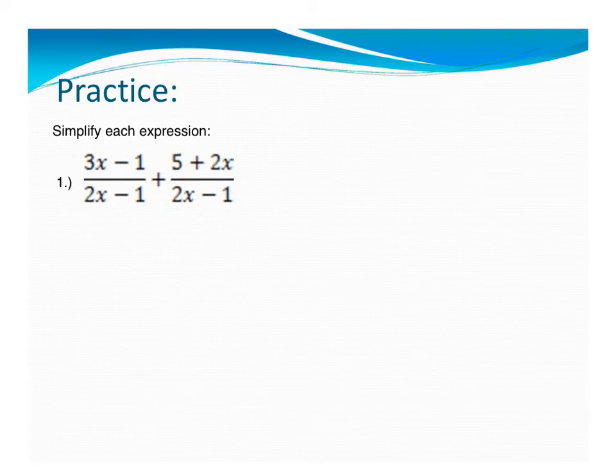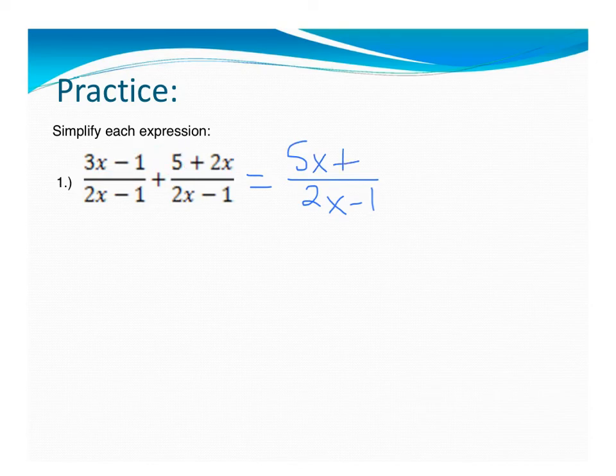Let's try one more with like denominators, and I'll move on to something a little bit more tricky because I know you're itching for something more difficult. Well, I have the same denominators, 2x minus 1 and 2x minus 1. So my next part will have 2x minus 1, and then I'm just going to add these numerators together. Well, I have 3x and 2x that gives me 5x. Then I have negative 1 and positive 5 that gives me positive 4.